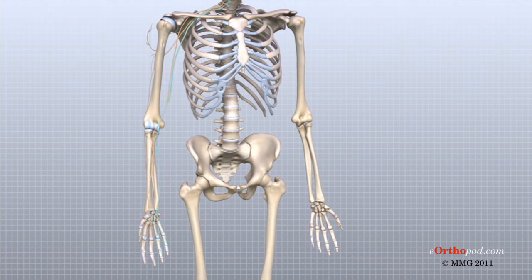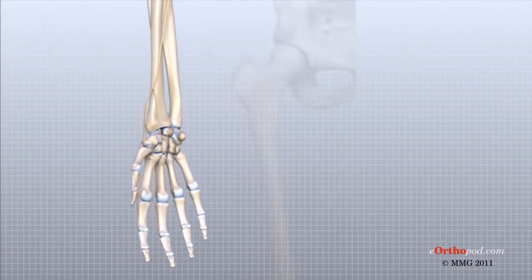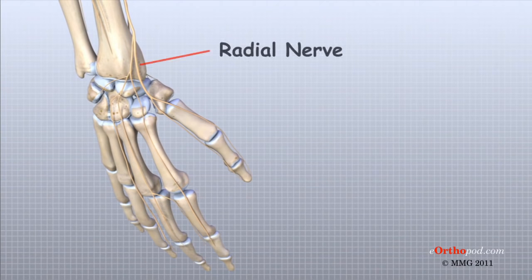The radial nerve runs along the thumb side edge of the forearm. It wraps around the end of the radius bone toward the back of the hand. It gives sensation to the back of the hand from the thumb to the third finger, and also supplies the back of the thumb and just beyond the main knuckle of the back surface of the ring and middle fingers.